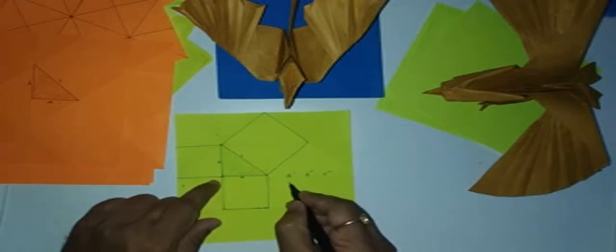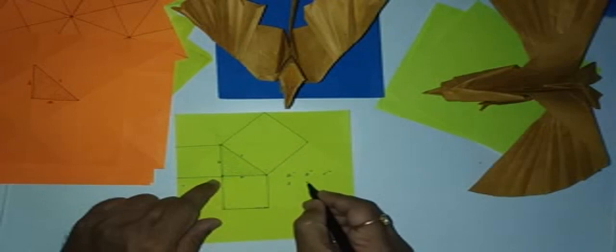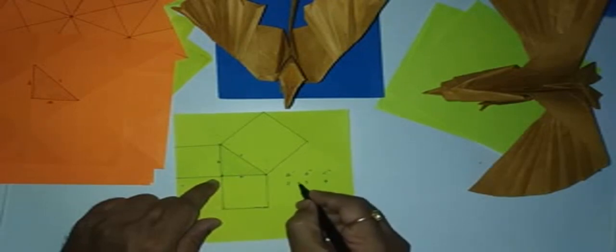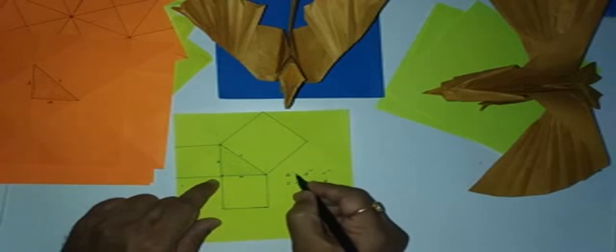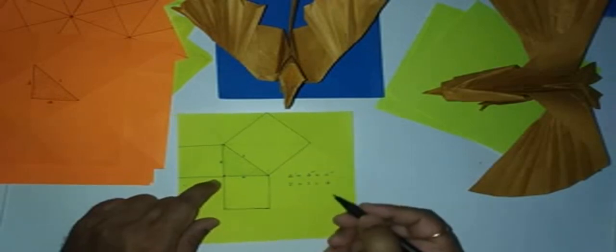And A square has two triangles. B square has two triangles. And C square has four triangles. 2 plus 2 is equal to 4. So A square plus B square is equal to C square.